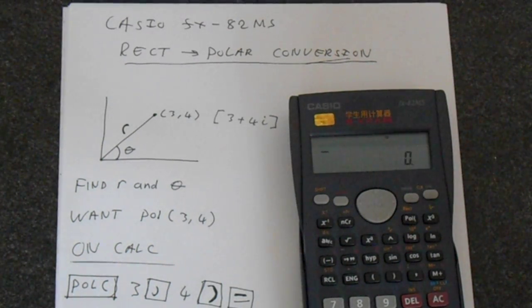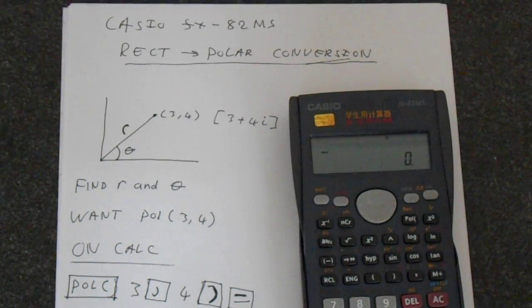In this video I'm going to show you how to do basic operations with complex numbers, so rectangular or polar conversions and back again using a Casio FX82MS calculator.